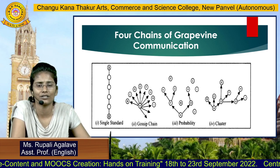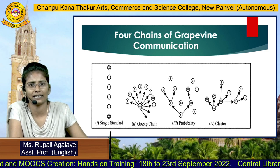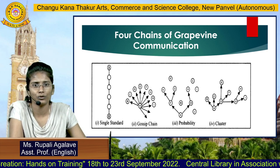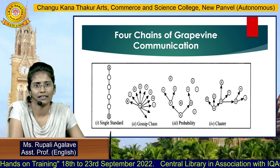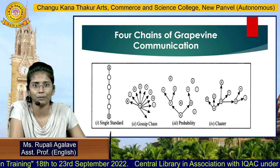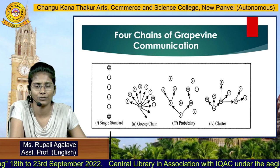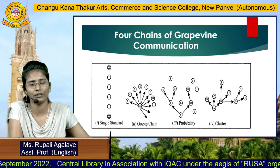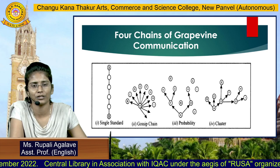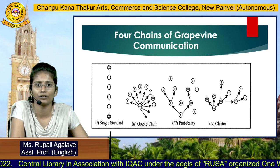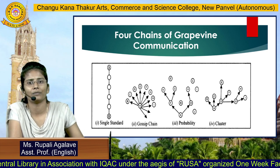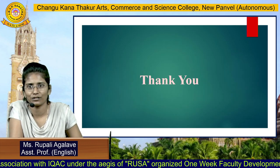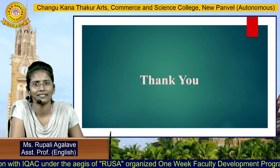The last chain is the cluster chain, where a person shares information only within their comfortable group of friends, and then that friend shares it with their own comfortable group. These are the types of informal communication we can have. That's it about today's session — thank you.